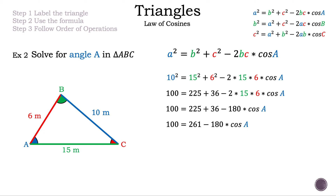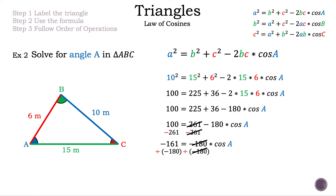Looking at 261: since it is positive, we subtract 261 from both sides. Those terms cancel on the right, and on the left: 100 − 261 = −161. Now we have −161 = −180·cos(A). Since we are multiplying by −180, we divide both sides by −180. Those cancel on the right, and −161 ÷ −180 = 161/180. So 161/180 = cos(A).